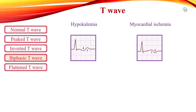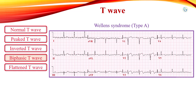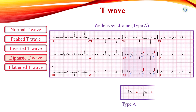In Wellens syndrome, two patterns of T-wave abnormalities are observed. In type A, biphasic T-waves with an initial positive deflection and terminal negative deflection are seen in leads V2 and V3. T-waves evolve over time from type A to type B, where T-waves are deep and symmetrically inverted. Wellens syndrome is highly specific for critical stenosis of the left anterior descending artery.